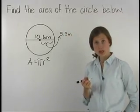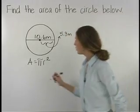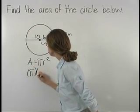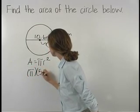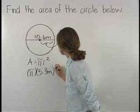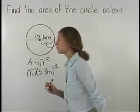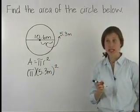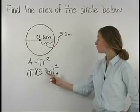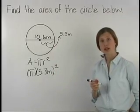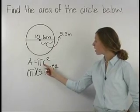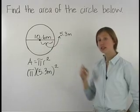So plugging into the formula, we have pi times 5.3 meters squared. A common mistake is to plug 10.6 meters into the formula, but remember that we must plug in the radius and not the diameter.